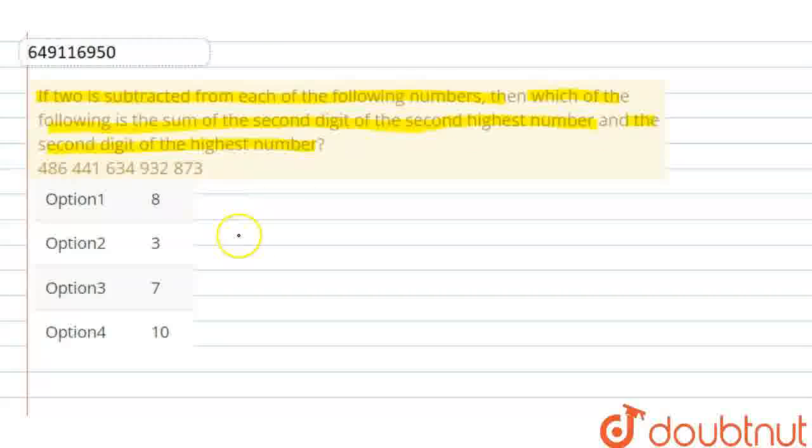Simply, you have given some numbers, that is 486, then 441, 634, 932, and 873.